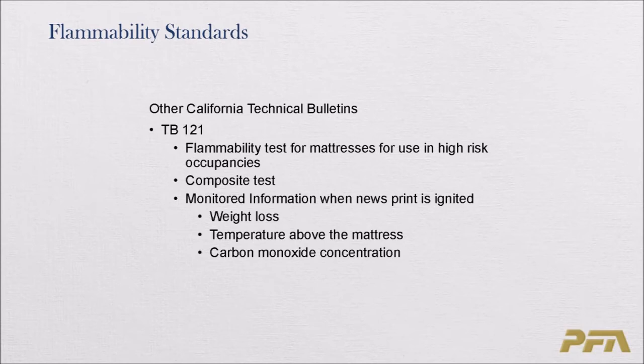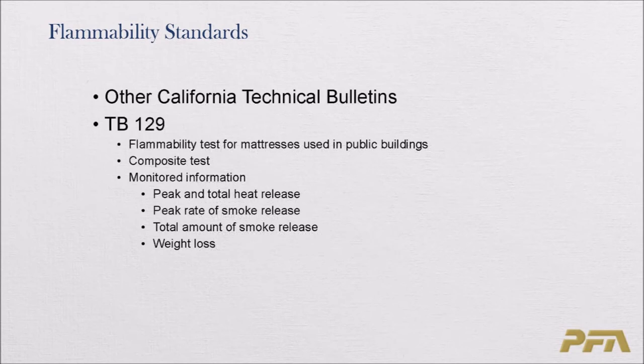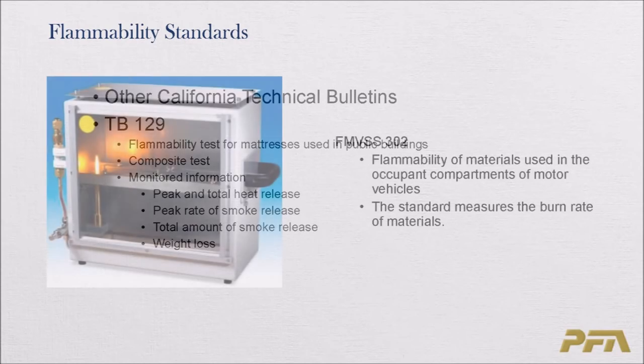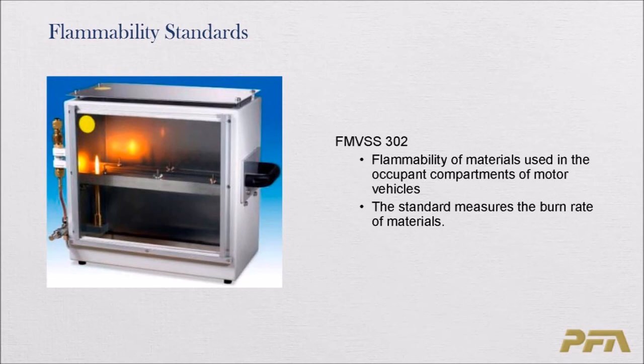California Technical Bulletin 121 is a flammability test for mattresses in high-risk occupancies such as jails and prisons. It is a composite test monitoring weight loss, temperature above the mattress, and carbon monoxide concentration. TB 129 is also for public buildings but lower-risk ones like hotels and motels — it is a composite test monitoring peak and total heat release, peak rate of smoke release, total amount of smoke release, and weight loss.